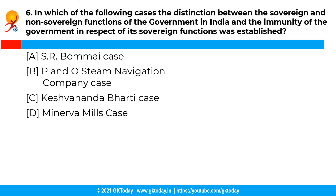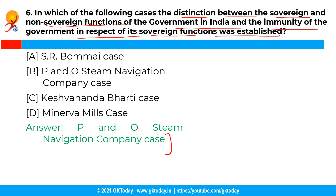The next question is: in which of the following cases was the distinction between the sovereign and non-sovereign functions of the government in India, and the immunity of the government in respect of its sovereign functions, established? The correct answer is option B, the P&O Steam Navigation Company case. In this famous case of 1861, the distinction between the sovereign and non-sovereign functions of the government of India and the immunity of the government in respect of its sovereign functions was established.